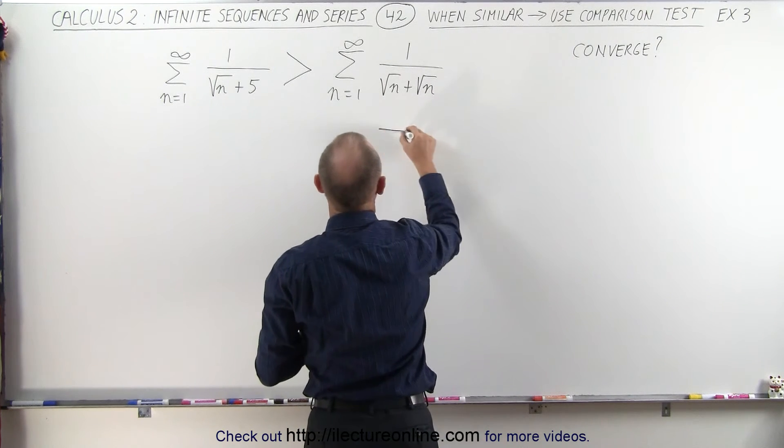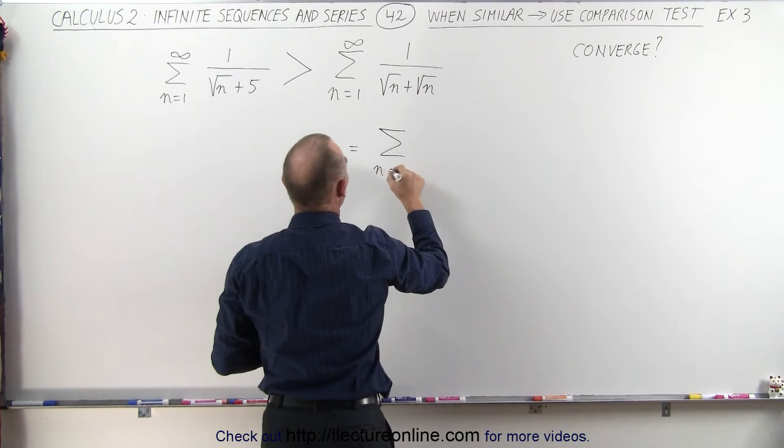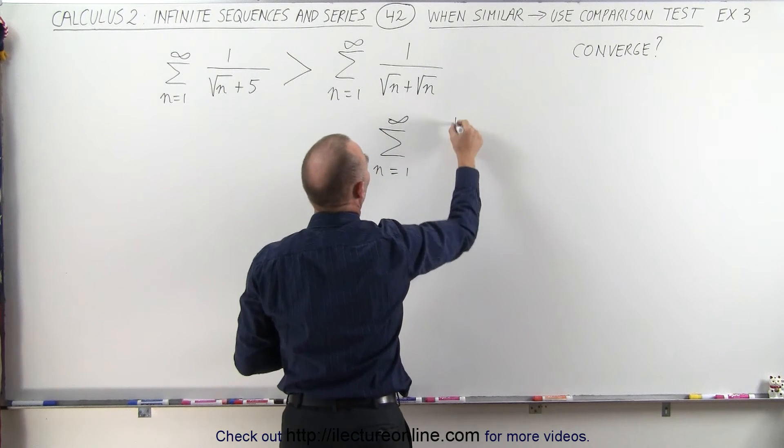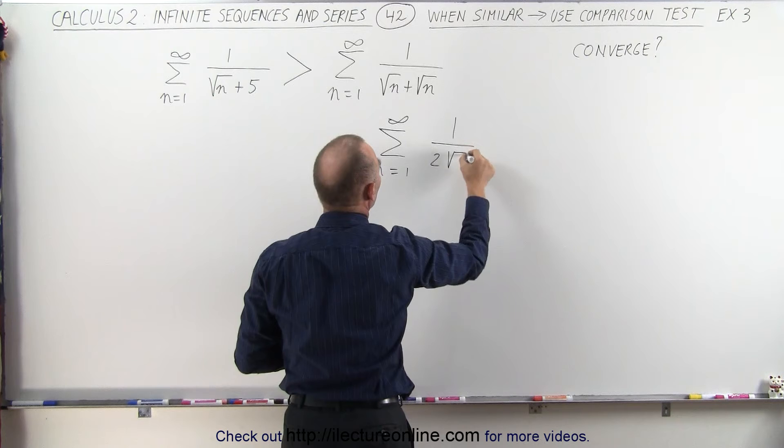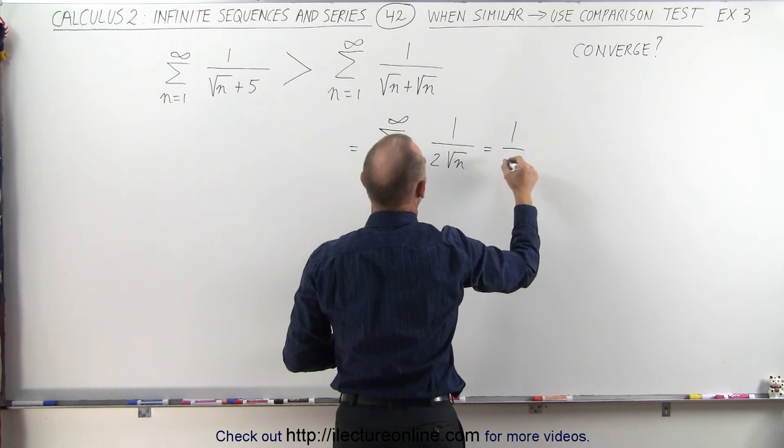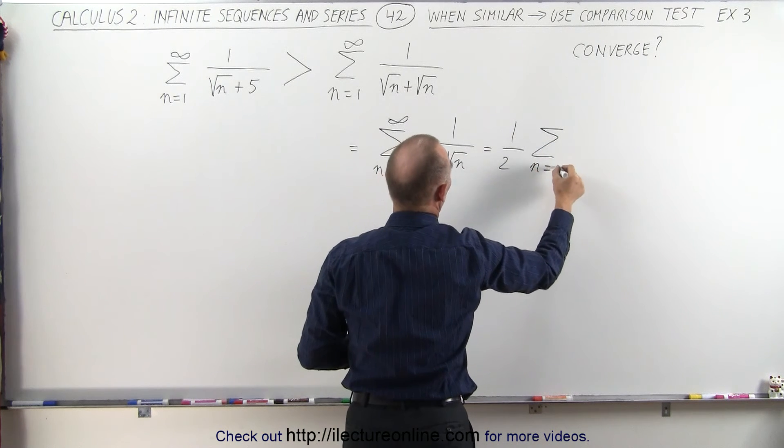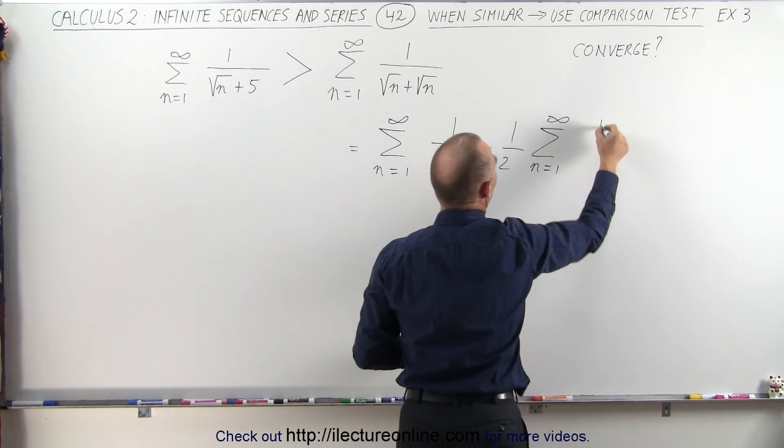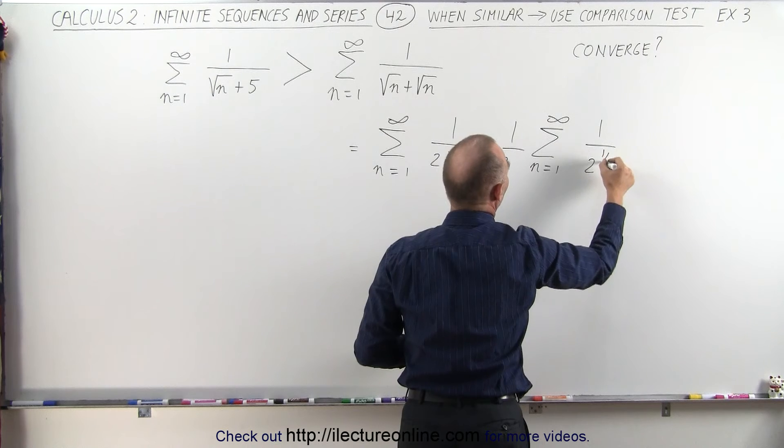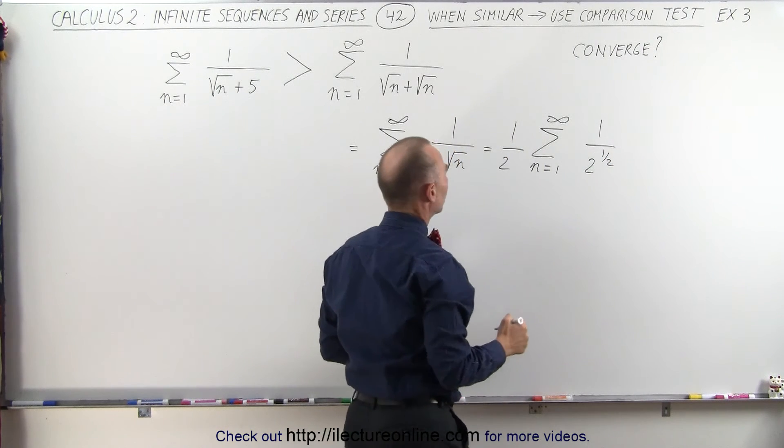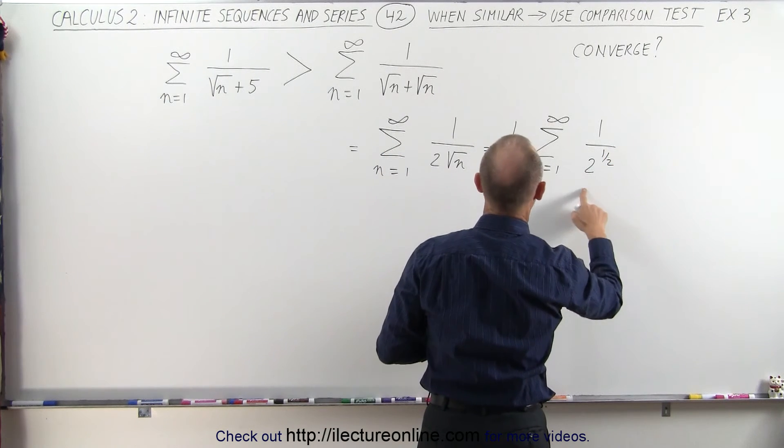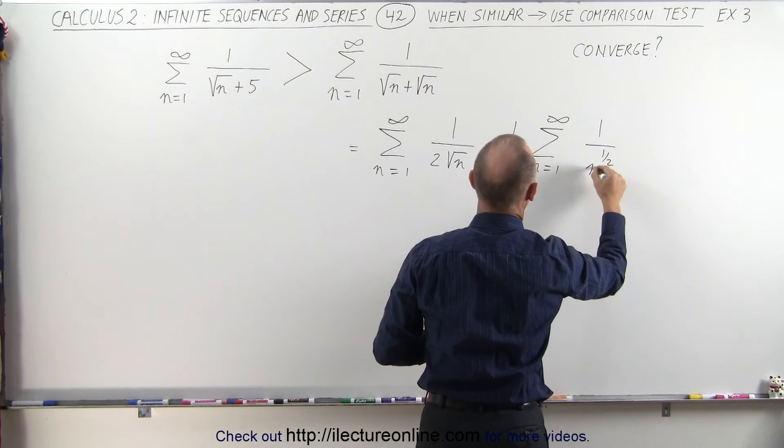This can be written as the infinite sum from n equals 1 to infinity of 1 divided by 2 times the square root of n, which can be written as 1 over 2 times the infinite sum from n equals 1 to infinity of 1 divided by n to the 1 half power.